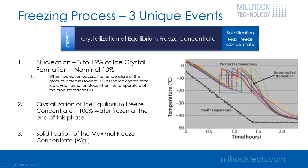If you look at this on a graph, typically the product will super cool to a certain temperature. One of the vials will nucleate and when it nucleates it goes up in temperature, then another vial will nucleate and another vial will nucleate. You can see vials nucleating at different temperatures and different times, and then once all of them form ice and all the available water has crystallized, the temperature of the product can start to reduce, and then we're into the solidification of a maximal freeze concentrate.